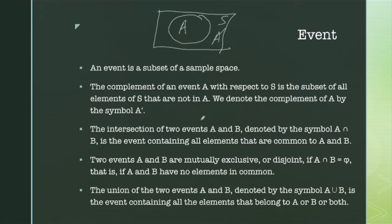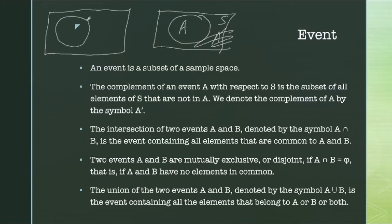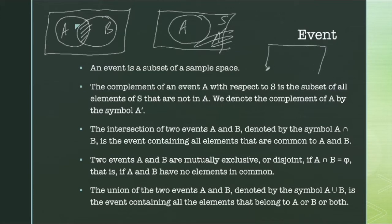The intersection of two events A and B, denoted by the symbol A∩B, is the event containing all the elements that are common to A and B. For example, in a sample space with two events A and B, A∩B contains all elements common to both A and B. If two events are mutually exclusive — meaning one event will occur but the other will not at the same moment — then the intersection of A and B will be the null event, because there are no common elements.